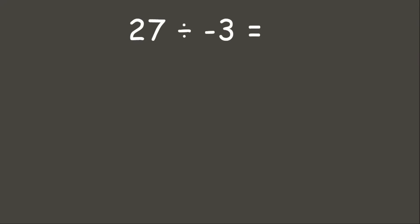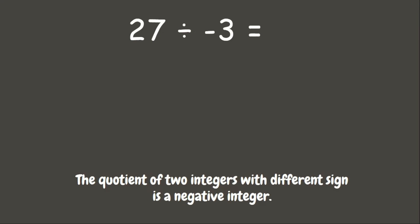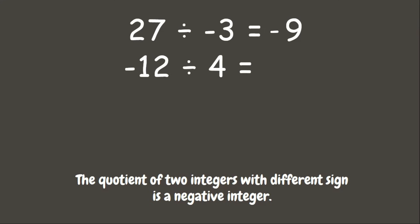Now let's try more examples without using any counters. Our first example is positive 27 divided by negative 3. Remember, when dividing two integers with different signs the answer is negative, so 27 divided by 3 is 9, and since they have different signs, our answer is negative 9. Next: negative 12 divided by 4 — 12 divided by 4 is 3, and since they have different signs, the answer is negative 3.